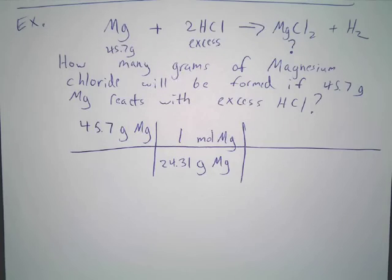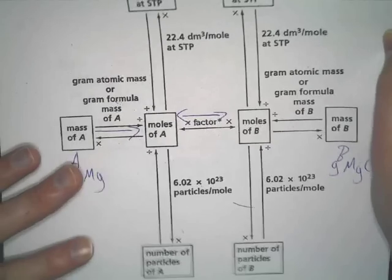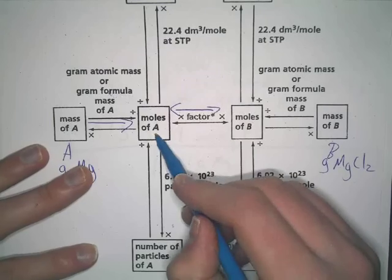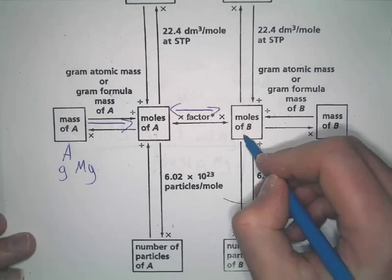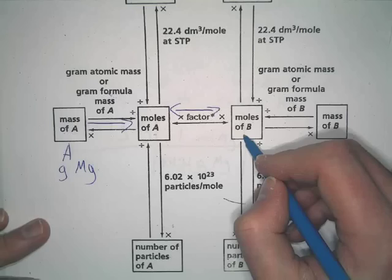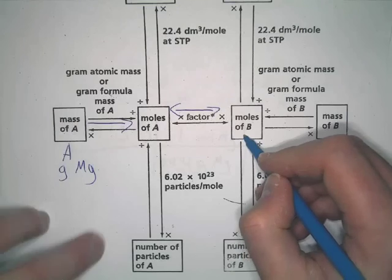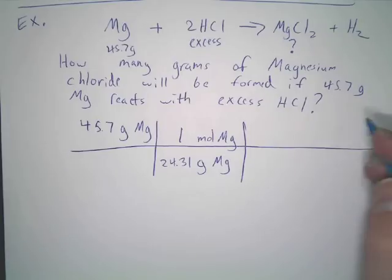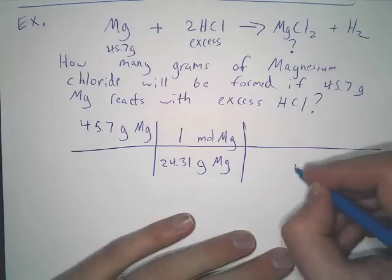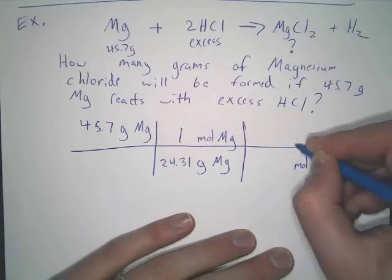Next. We now are at moles of magnesium, and we want to get moles of magnesium chloride. So, we're going from moles of A to moles of B. Okay. So, the next step is simply to take the coefficient ratio. So, moles of magnesium goes on the bottom.